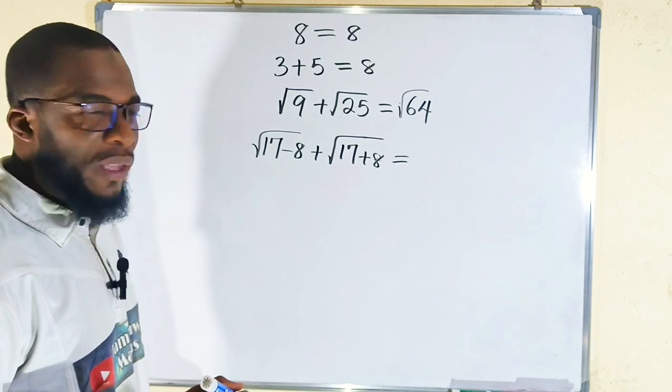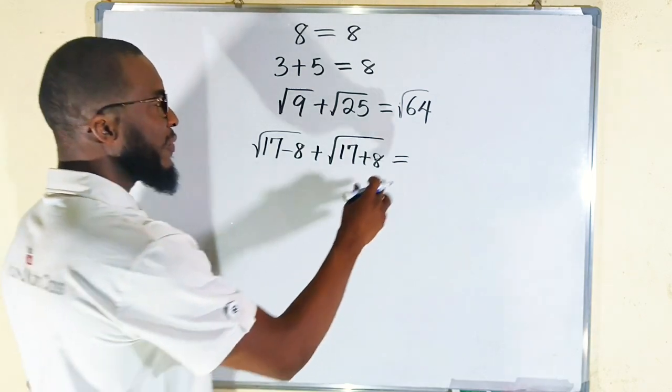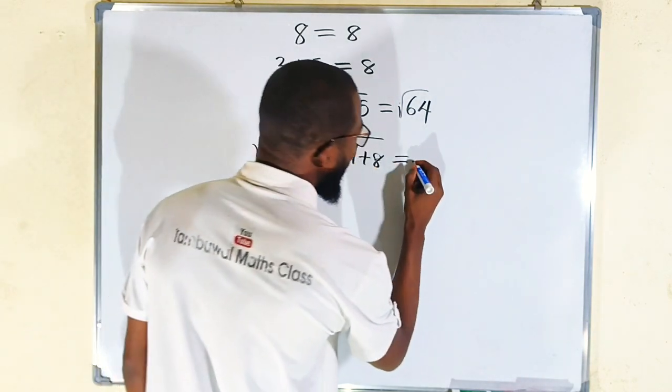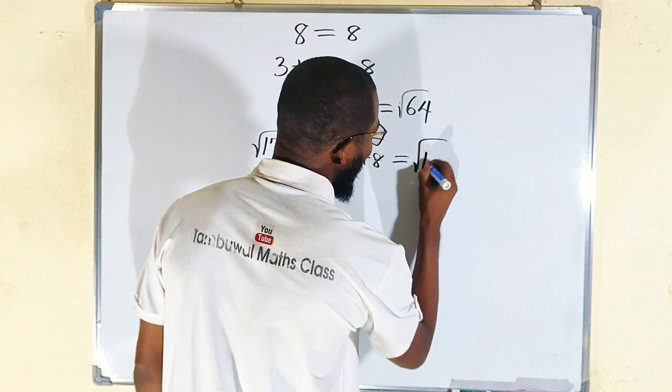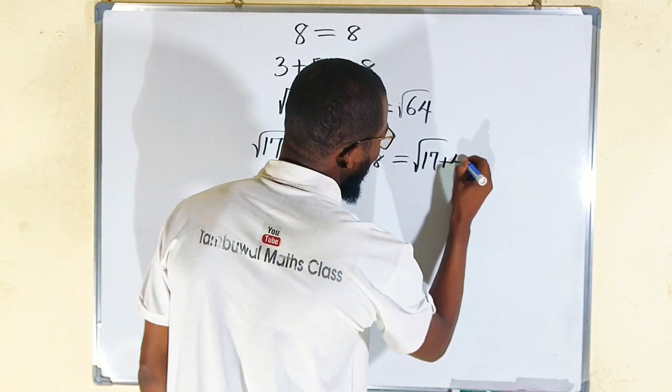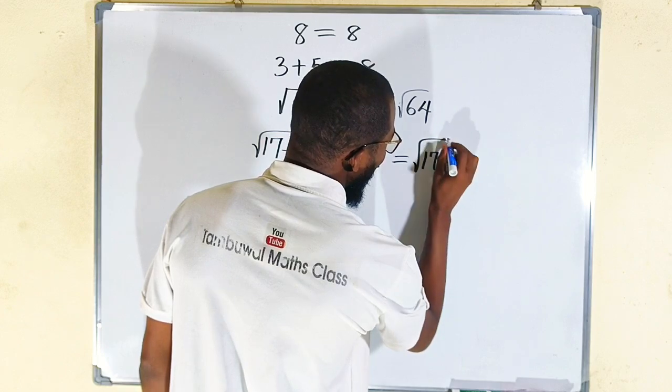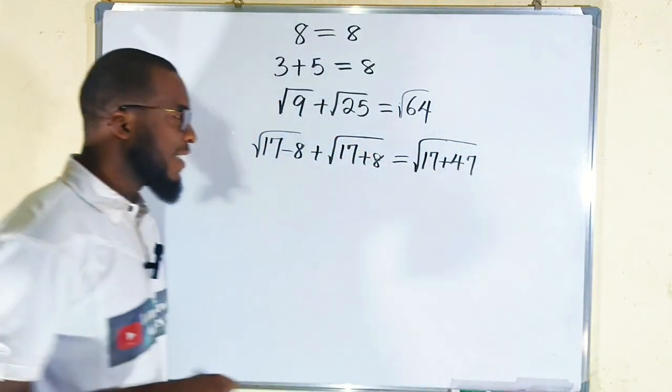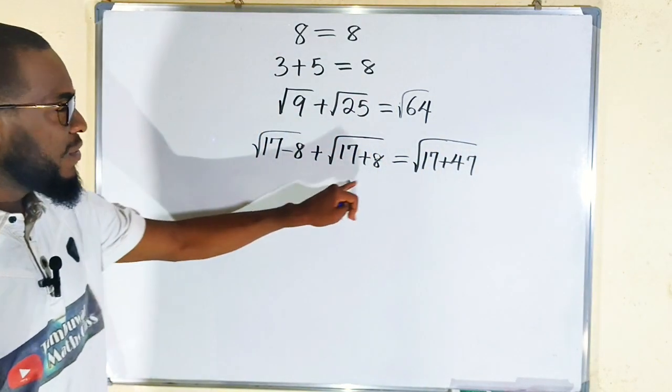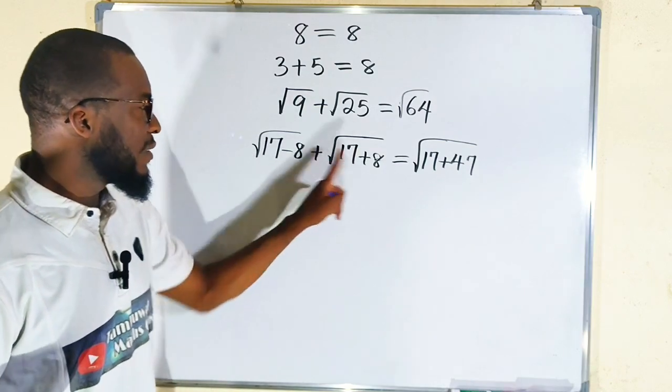I know that 17 plus 47 is 64, so this can also be expressed as square root of 17 plus 47. The goal is here, and you see that in all of these radicals we have 17, 17, 17, 17.